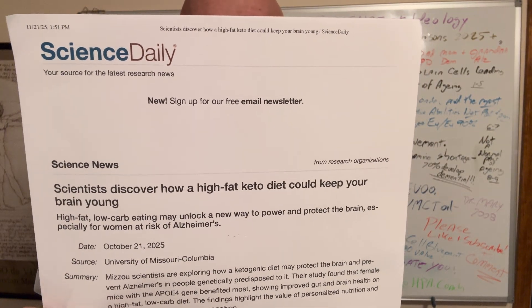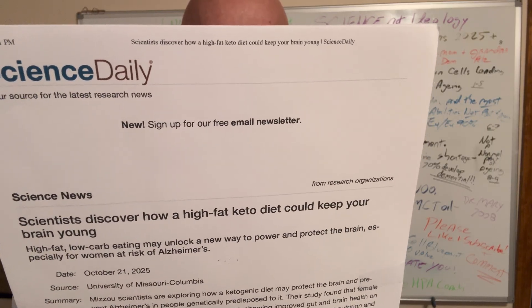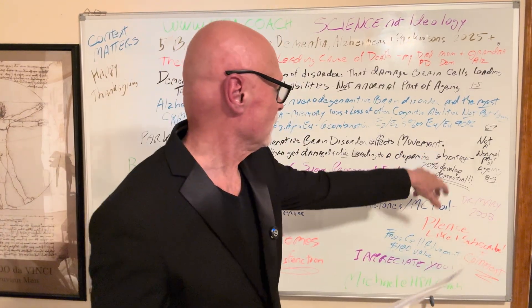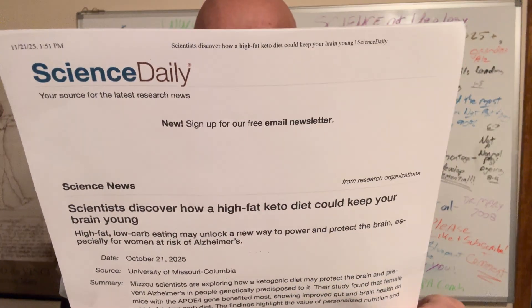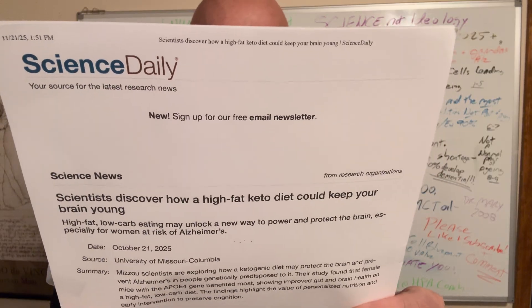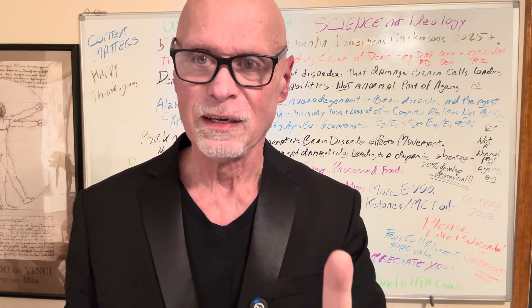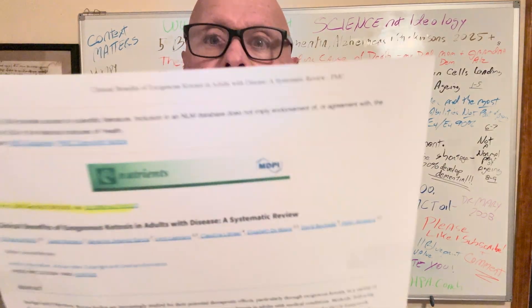Scientists discovered how a high-fat ketogenic diet can keep the brain young. A study found that female mice with the APOE4 gene that I talked about right here showed improved gut and brain health on a high-fat, low-carb diet. I'm not fond of mice studies, but something like this, they have to look somewhere.